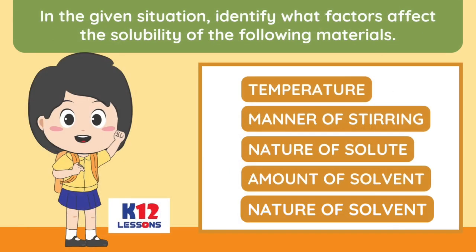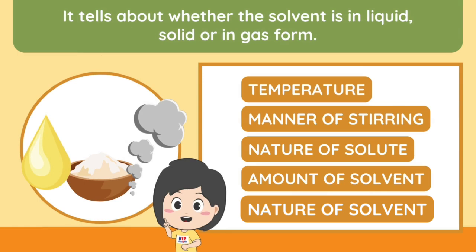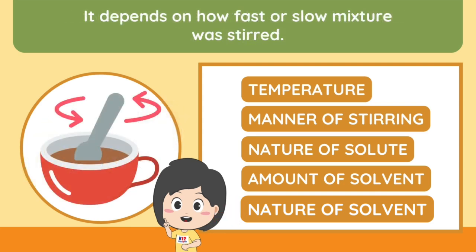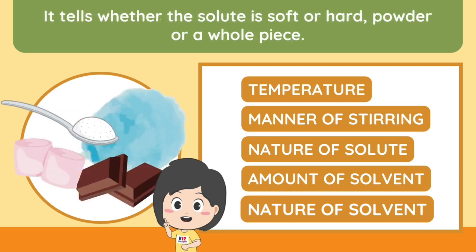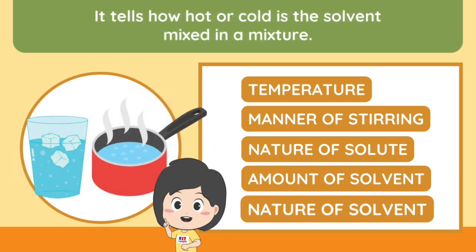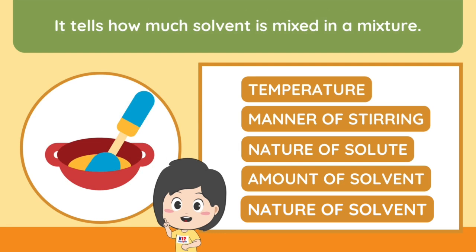In the given situation, identify what factors affect the solubility of the following materials. Choose your answer inside the box. It tells about whether the solvent is in liquid, solid, or gas form. It depends on how fast or slow the mixture was stirred. It tells whether the solute is soft or hard, powder or a whole piece. It tells how hot or cold the solvent is. It tells how much solvent is mixed in a mixture.